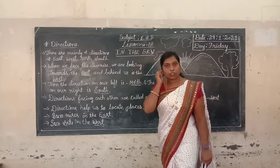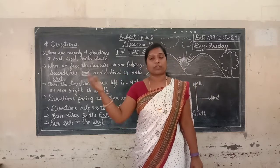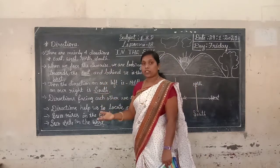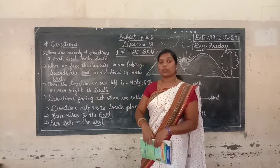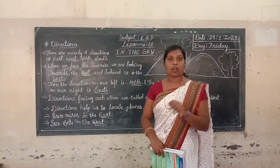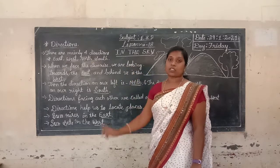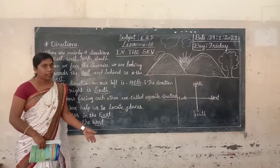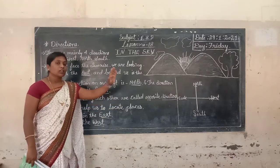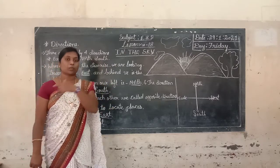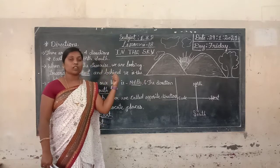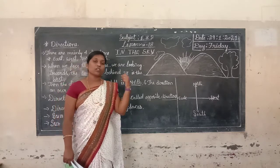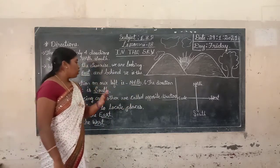Don't confuse. When you are standing facing the sun rising, that is the direction of east. Behind you is west. Your left hand shows north and your right hand shows south. Directions facing each other are opposite directions — north's opposite is south, east's opposite is west. Directions help us to locate places.